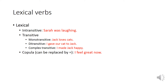Ditransitive verbs are verbs like 'gave'. For example: 'I gave our cat to Jack.' Here we have a direct object — I gave what? Our cat. And an indirect object — to whom? To Jack. When there are two objects, a direct object and an indirect object, we say the main verb is ditransitive. 'Di' means two.